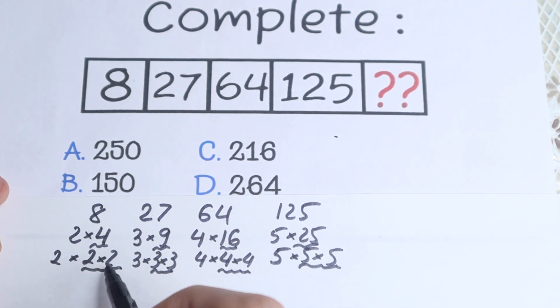So we have 2 times 2 times 2, 3 times, we have 3 times, we have 4 and we have 5. This looks like our pattern, because if you know a little bit about algebra, this 2 times 2 times 2 can be written as 2 cubed.